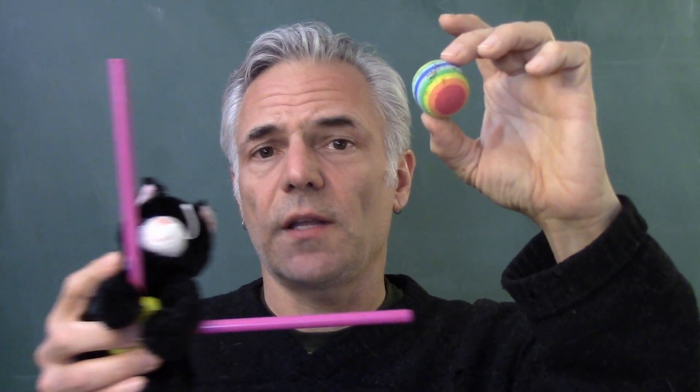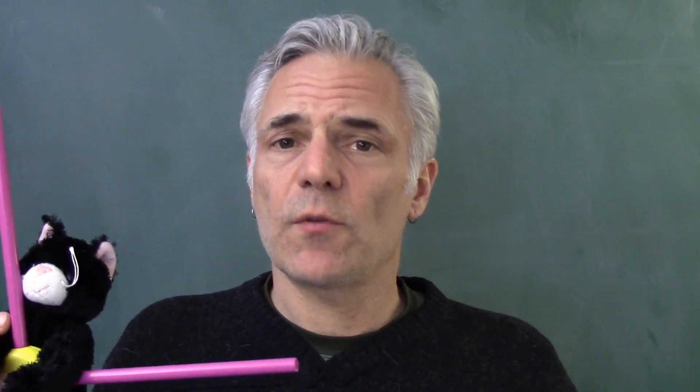We could have another reference frame, another observer. Here's our friend Beowulf, and maybe Beowulf is moving left to right. Depending on when this event occurs, Beowulf and Anna will describe it differently. The space-time coordinates they'll have for the same event will be different.